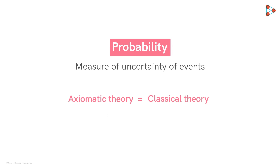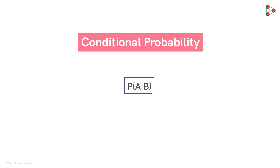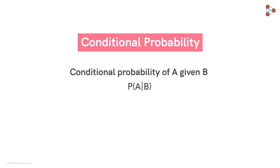Now, we will be talking about an important concept of probability called the conditional probability. What is conditional probability? You would have seen a notation like this: P of A vertical bar B. We pronounce this as the conditional probability of A given B. This vertical line means 'given'.